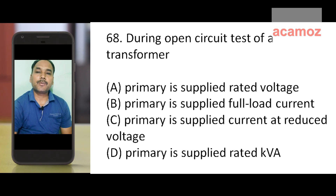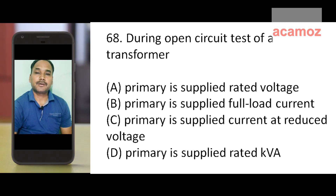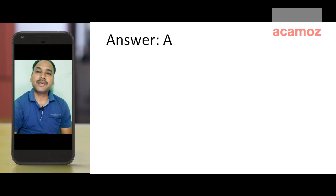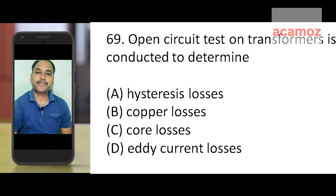Next question: during the open circuit test of a transformer, the options are — primary supplied rated voltage, primary supplied full load current, primary supplied current at reduced voltage, and primary supplied rated KVA. Option A: primary supplied rated voltage is the correct answer.